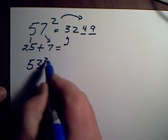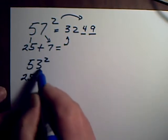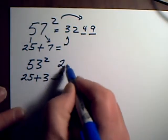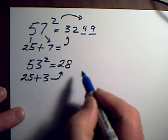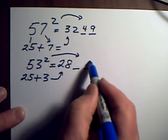So if it was 53 squared, for the five I write down 25. The other digit is a 3, I add 25 and 3, that gives me 28.